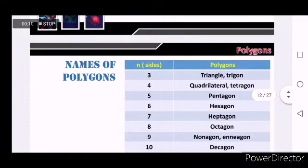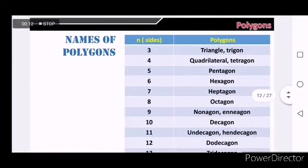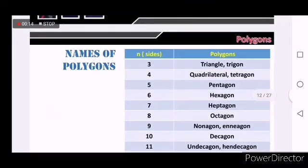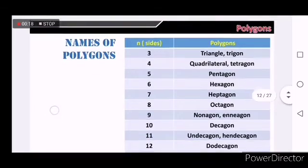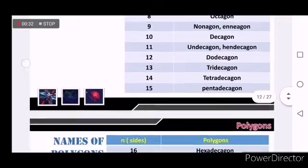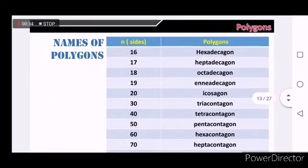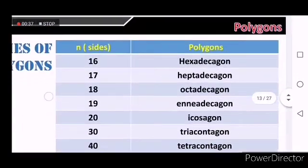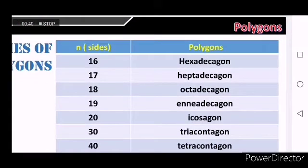We can name polygons according to the number of their sides. The smallest one is called triangle or sometimes called trigon. Next is a tetragon or quadrilateral. Pentagon, hexagon, heptagon, octagon, nonagon, decagon, undecagon, dodecagon, and so on. Notice that the prefixes are changing depending on the number of sides.